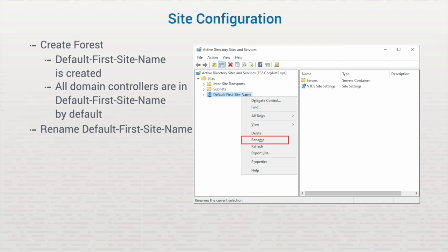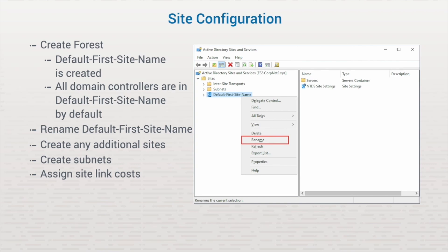Let's say that Portland is the home office. You could change the original site from Default-First-Site-Name to Portland. You could then create two additional sites: a Denver branch office and a Chicago branch office. Once you have the sites set up, you then create the needed subnets and associate them with their corresponding sites. Next, you create site link objects to mirror the WAN links and assign costs to the site link objects. You assign costs to control how replication happens on the pathways.